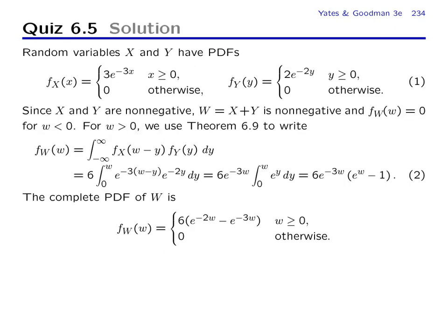So from the problem statement, we know that x is exponential with parameter 3, so the expected value is one-third. And since x and y are non-negative, we know that w is non-negative. And so the PDF of w is going to be 0 for w less than 0. Finally, for w greater than 0, we're going to use the theorem that we just derived.